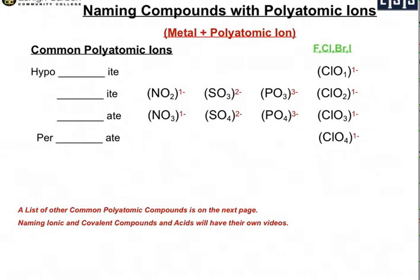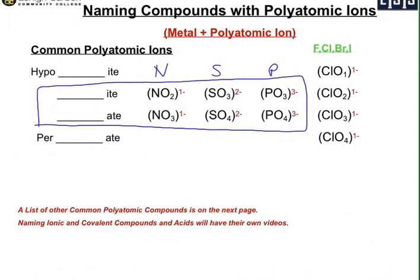The first ones are nitrogen, sulfur, and phosphorus combined with oxygen. Looking at just this box, on the left you'll see a suffix of ITE or ATE. Along the ITE row: because it's N, this is nitrite (N-I-T-R-I-T-E). If it's S, it's sulfite. And if it's P, it's phosphite. So you add the ITE to the prefix N, S, or P: nitrite, sulfite, or phosphite.